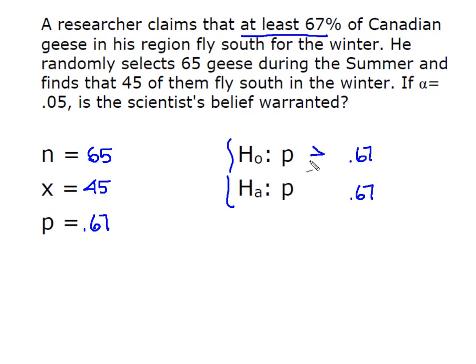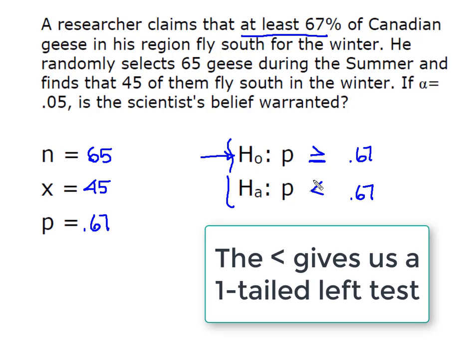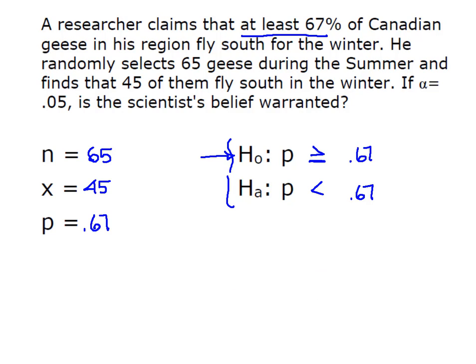So greater than or equal to in the null H0, and Ha are mathematical opposites. That makes this less than. I knew to put that greater than or equal to in my null because it had an equal to sign, and we know there's never an equal to sign in an alternative hypothesis.